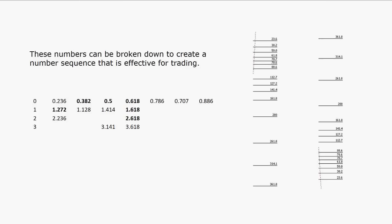Not all of the ratios should be used — if you use all of them you can pretty much curve fit it. So it's prudent not to curve fit. We'll use the most commonly used ratios. We've got to remember that trading is more of an art than a science, and we want to follow the herd. We'll use 0.382, 0.5, 0.618, 1.272, 1.618, 2.618 — and we'll be using 0.786 quite a bit as well.